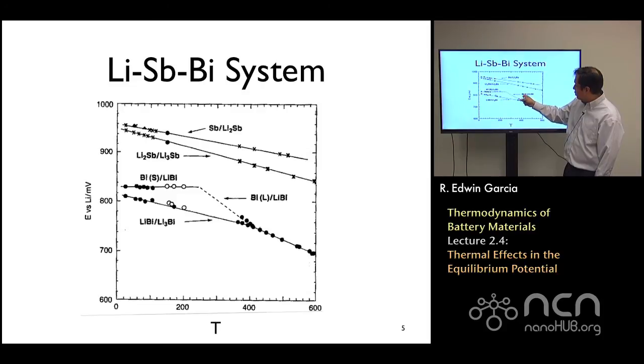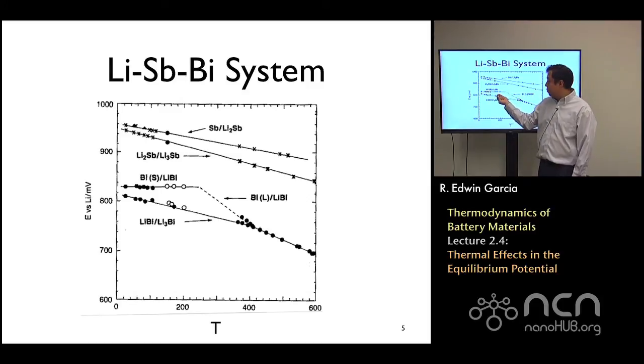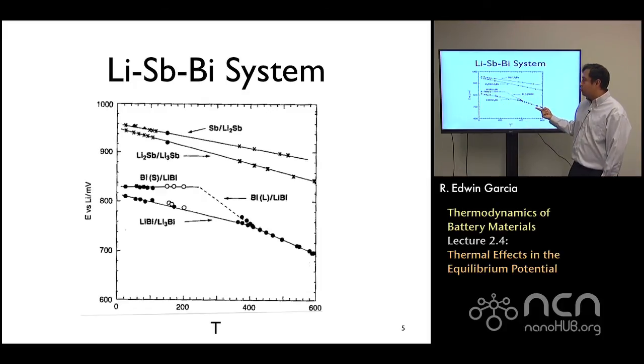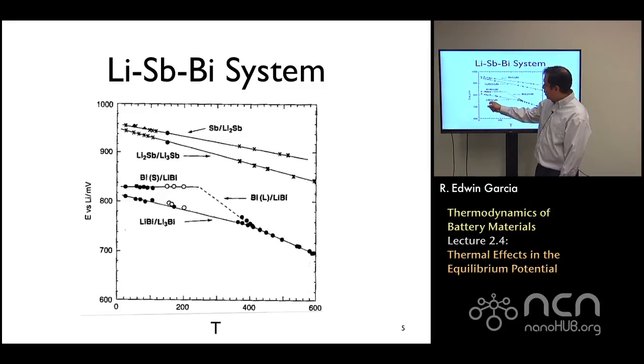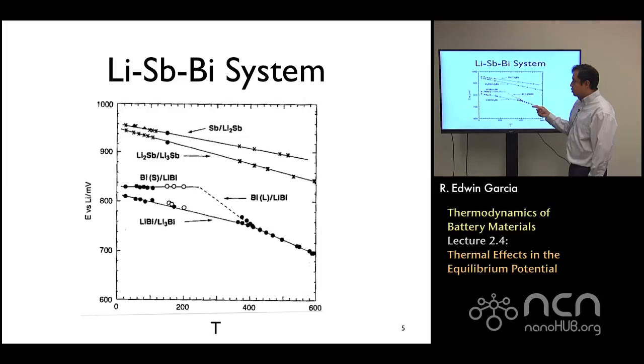Why? Because now you have the liquid bismuth in equilibrium with the Li-Bi system, and you go from a flat voltage—basically very poor temperature dependence—but the moment it undergoes a phase transition, then the temperature dependence becomes very linear.